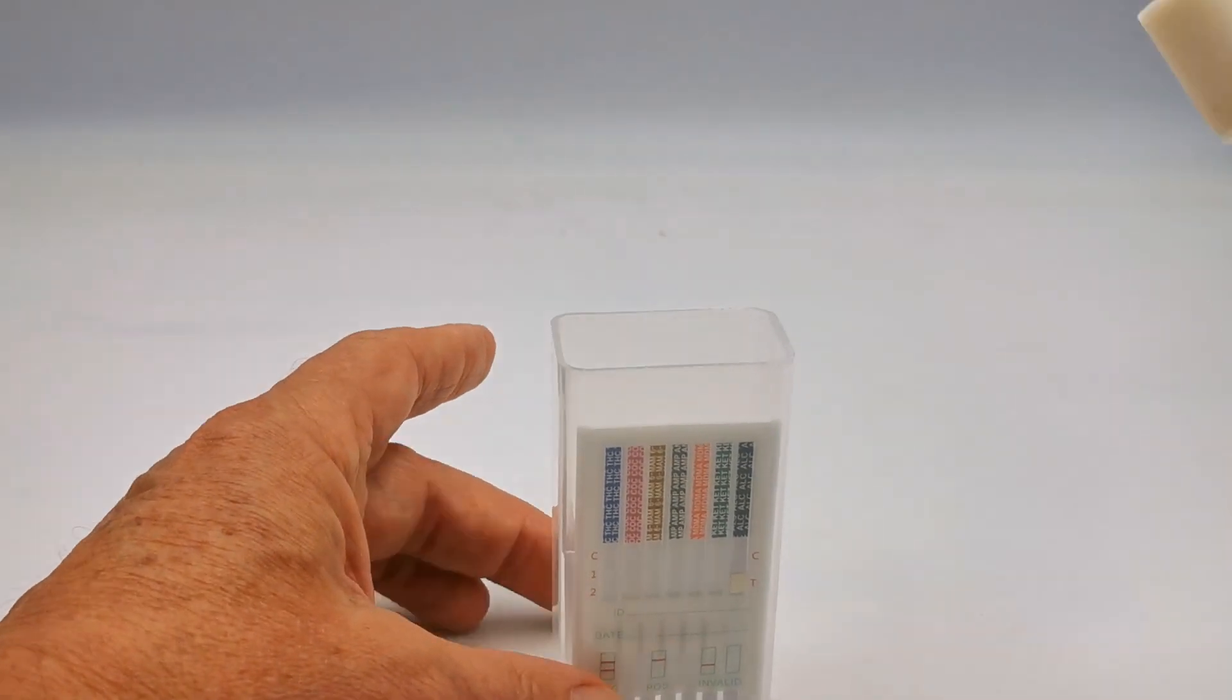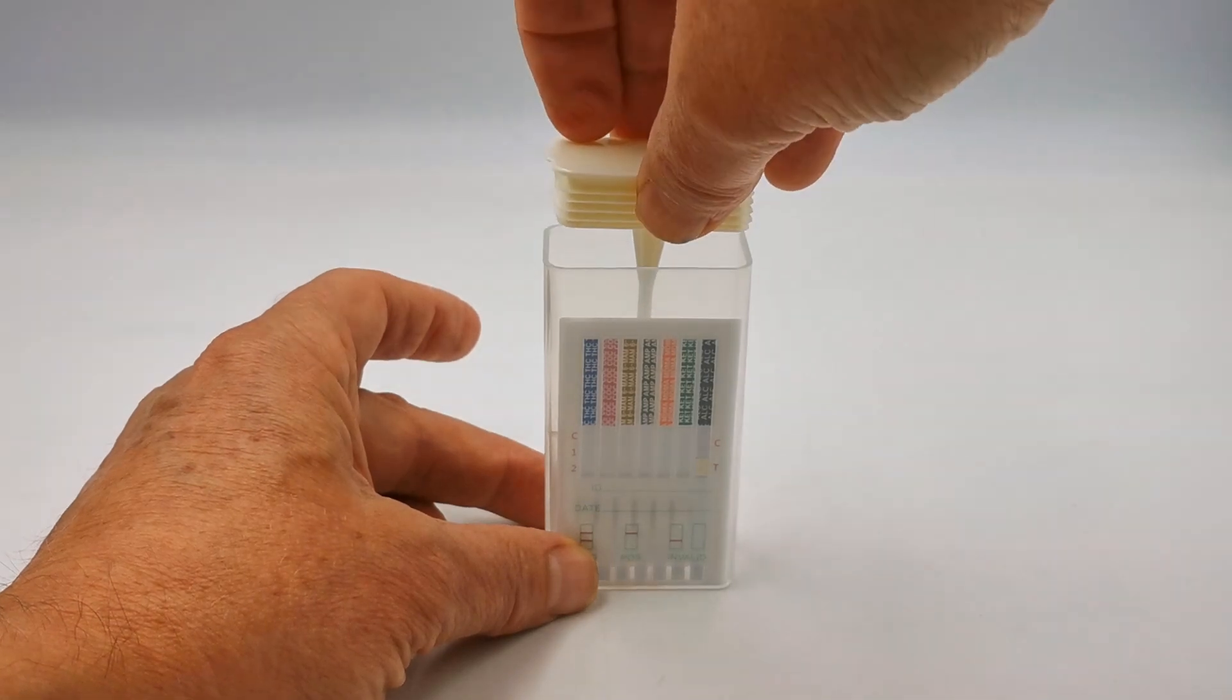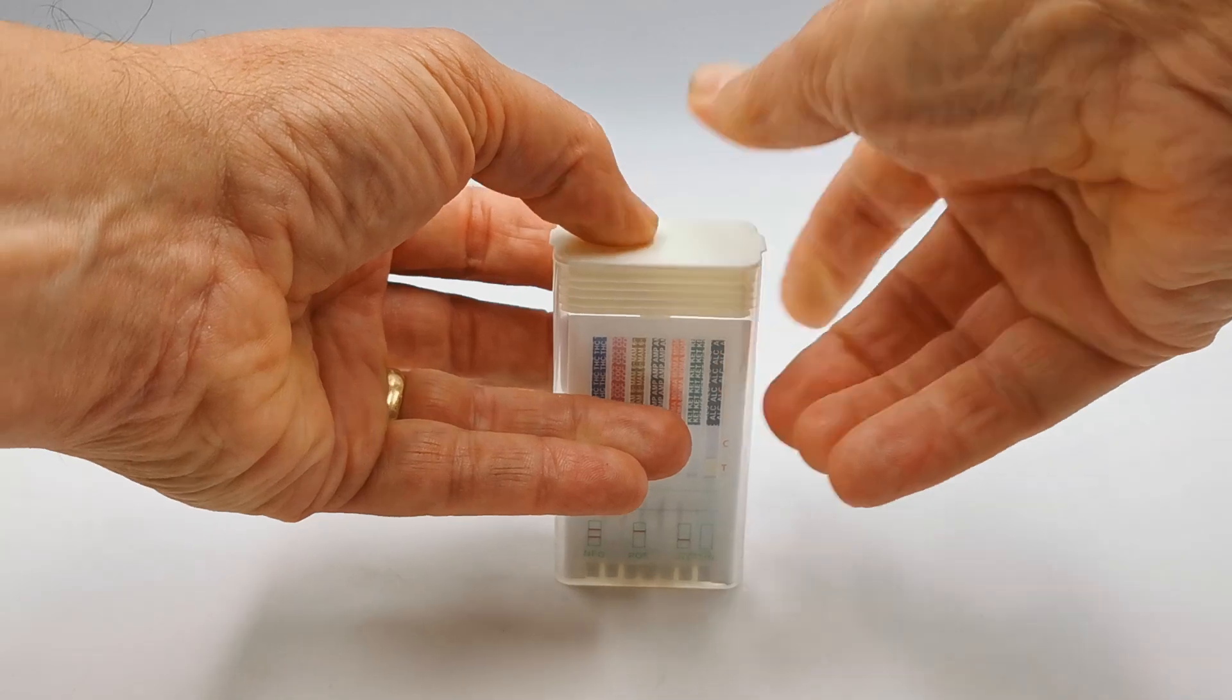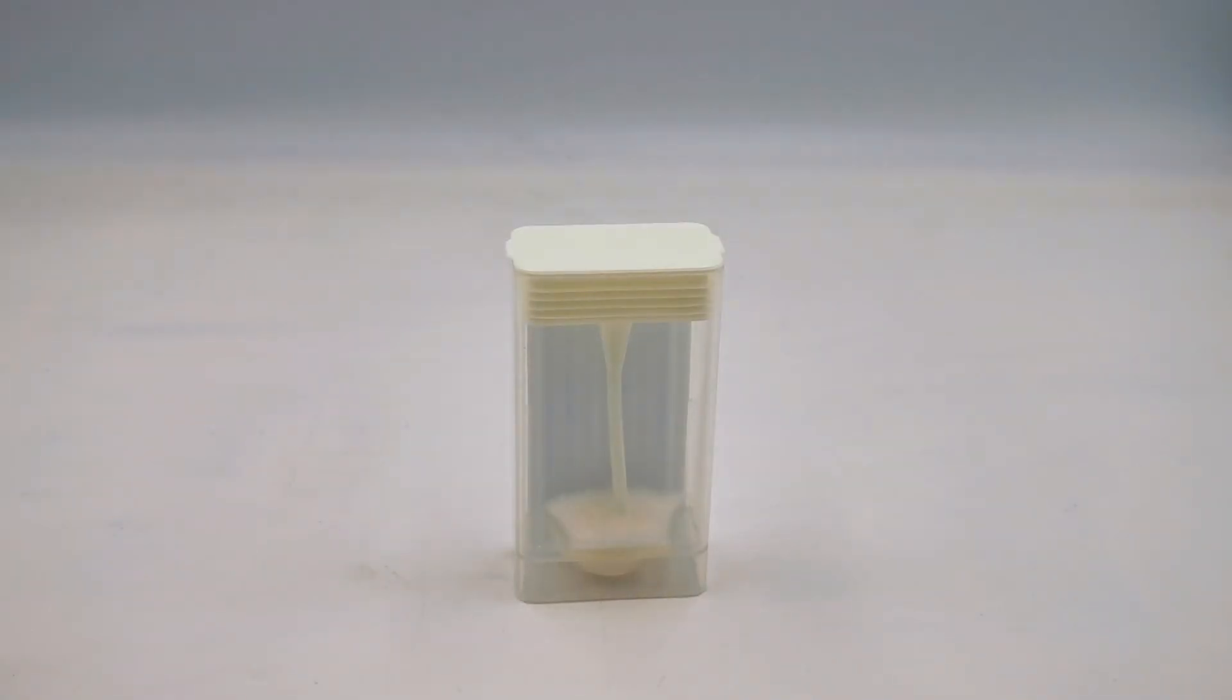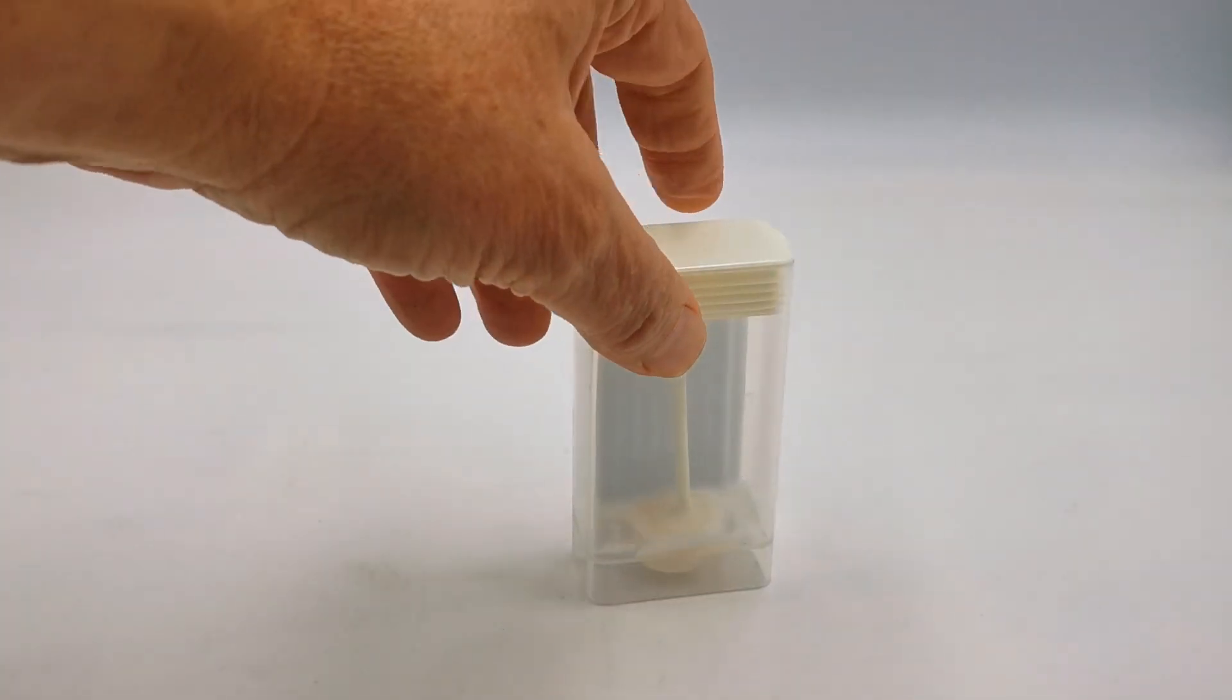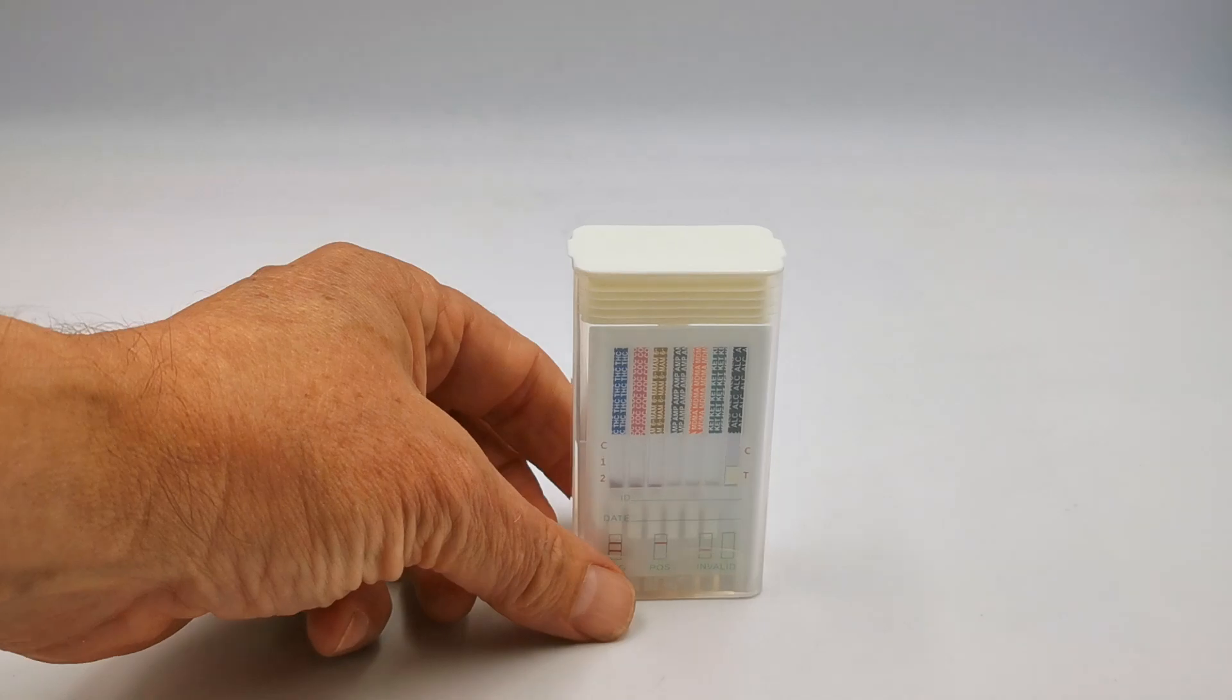Now I'm going to assemble this test with the cube in an upright position. Just introduce the swab and push down firmly, and that will dispatch the saliva from the swab into the base of the test. You can see there's excess saliva in there which will then start running these tests.